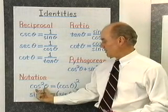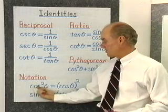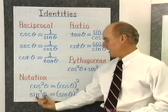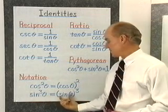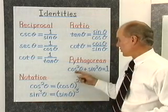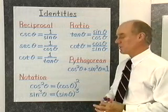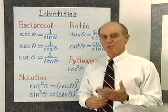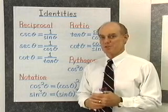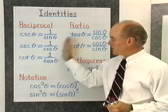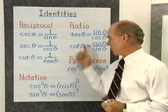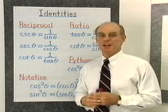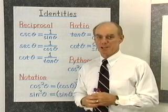For notation, we want to remember that cosine squared stands for the cosine of theta, quantity squared. And sine cubed of theta stands for the sine of theta, that quantity cubed. Also, remember there are two other Pythagorean identities: 1 plus tangent squared is equal to secant squared, and 1 plus cotangent squared is equal to cosecant squared. So these are the eight basic identities plus the other two Pythagorean identities that you need to have memorized in order to verify some of the more complicated identities.